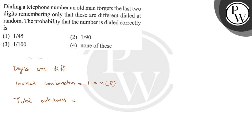For total outcomes: the first digit can be any of the 10 digits. And as the old man remembers that the digits are different, whichever digit appears in the first place cannot appear in the second place. So total outcomes is 10 times 9, which equals 90. This is the sample space.